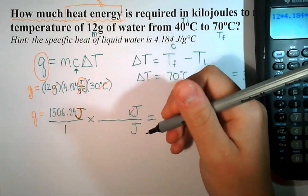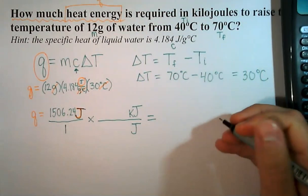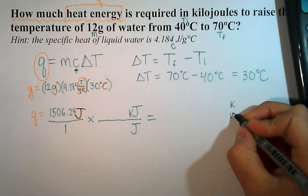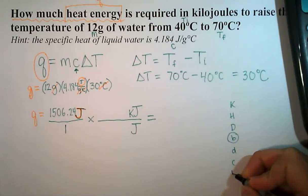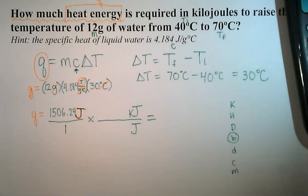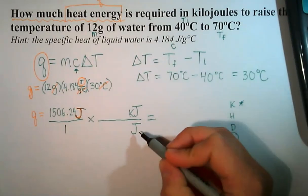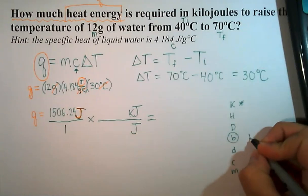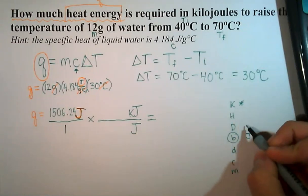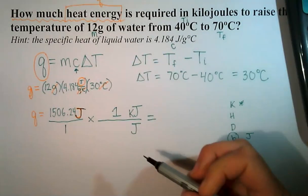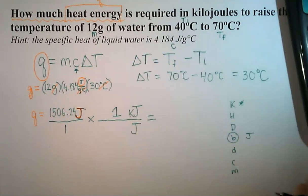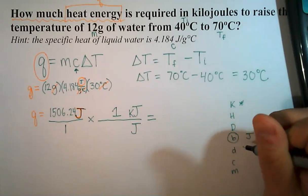We need to figure out which one is our bigger unit, and in case you've forgotten, we would use king, henry, died, bye, drinking, chocolate, milk. We have a kilo unit, and then joule is the base unit. So our bigger unit is the kilo unit, so we're going to put a one there, and we just need to figure out how many joules are in a kilojoule. And we do that by counting the steps.